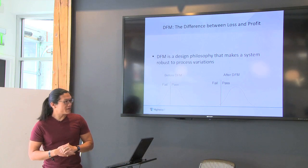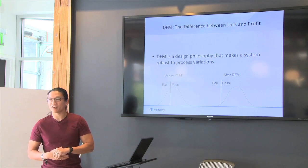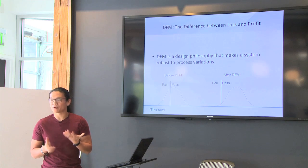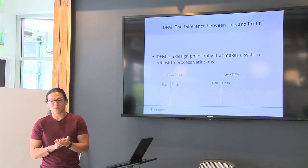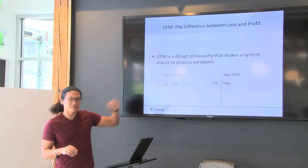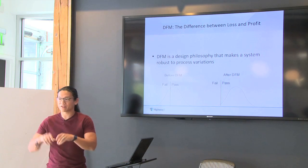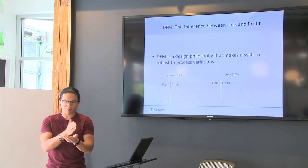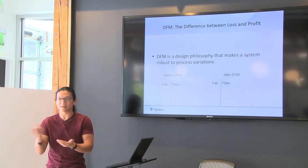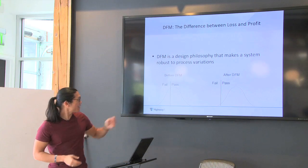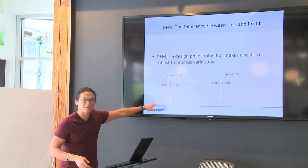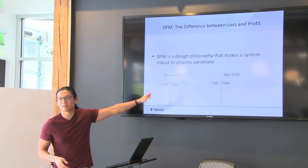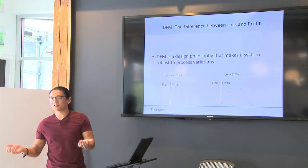Typically your margin is going to be 30% to 50% if you're really, really good. Now if you imagine a bell curve where your parametrics are falling and everything is different, you have a fail/pass curve where about 40% of your stuff is failing and 60% is passing — guess what happens to your margin?